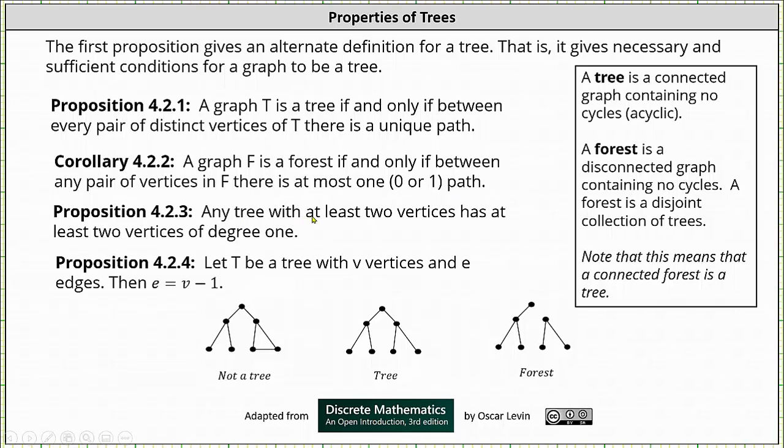The next proposition is that any tree with at least two vertices has at least two vertices of degree one.